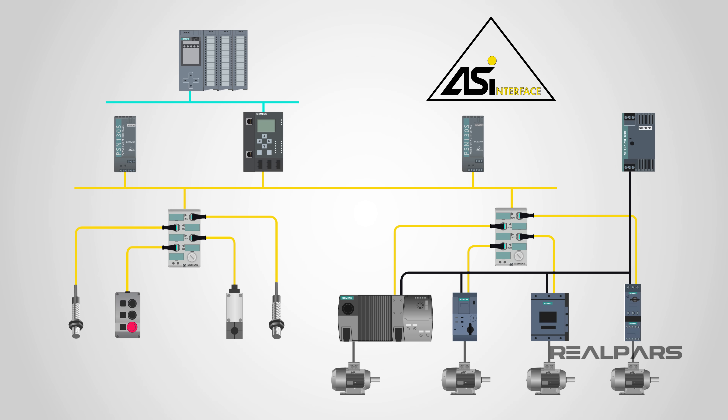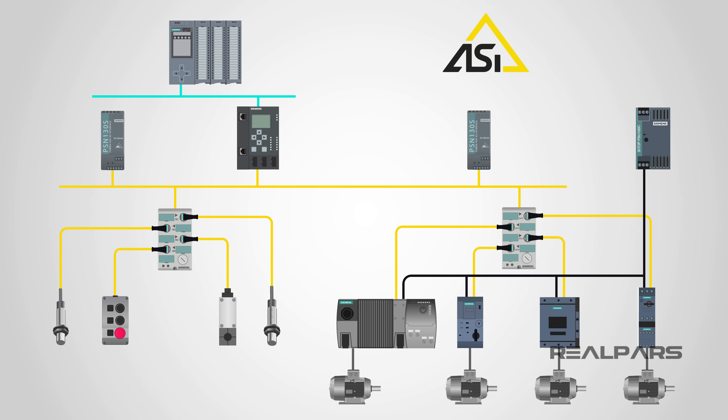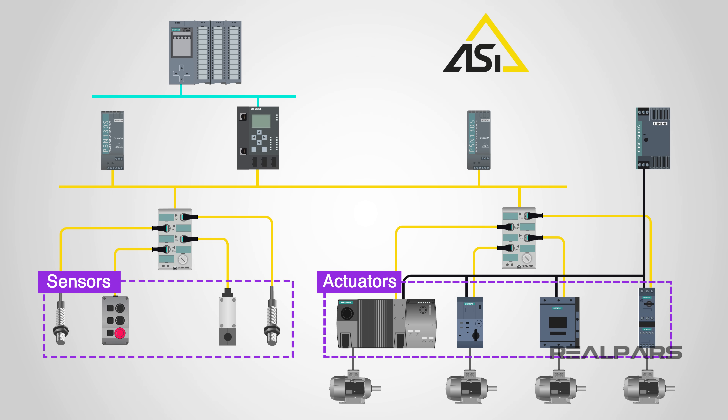AS Interface is usually shortened to ASI, and its full title is Actuator Sensor Interface. It's a simple networking system for devices found out in the field. AS Interface is an intelligent cabling system that is designed to replace the discrete wires linking actuators and sensors with a programmable logic controller or other controlling device.